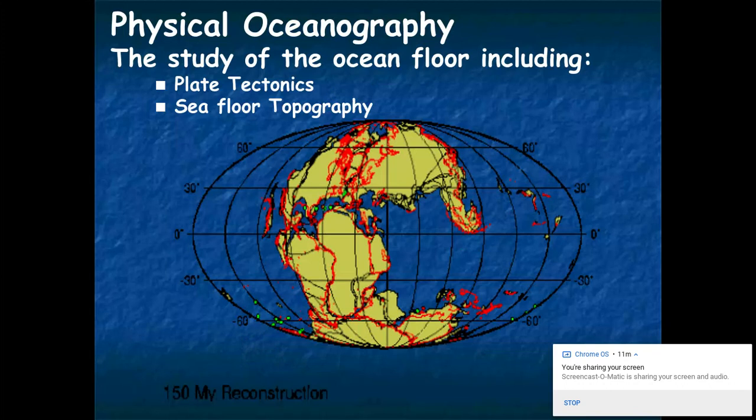Let's look at physical oceanography. As I mentioned earlier, physical oceanography in this class is basically looking at the characteristics of the seafloor and studying the ocean floor. This is not a biology class, so we're not going to look at life in the ocean; instead we're going to look at the features of the ocean floor. One of those areas we're going to study pretty extensively is plate tectonics, which of course describes moving continents.